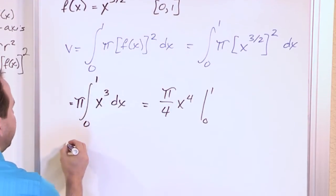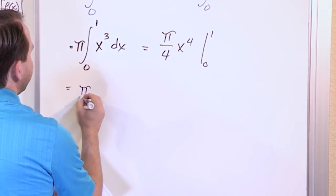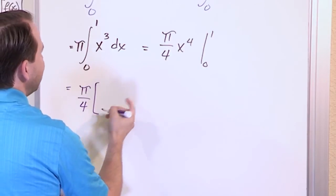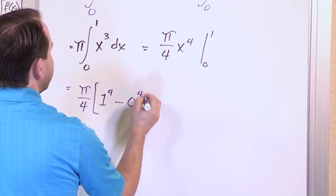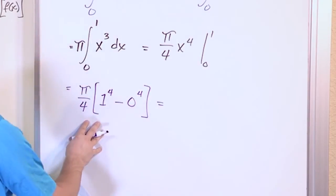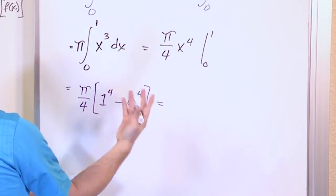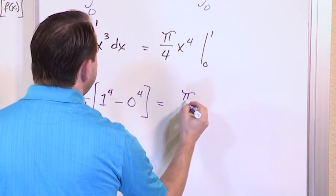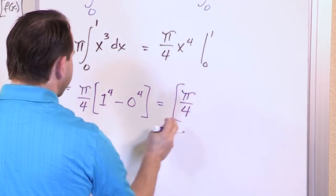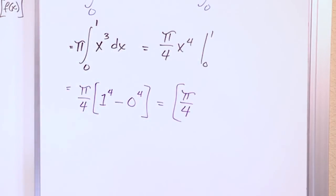And so now we just have to evaluate it. Here is pi over four. And then on the inside, we evaluate it at the upper limit of integration minus the lower limit of integration, just like this. Now on the inside, one to the fourth is one minus this is going to be zero. So really the answer just remains pi over four because you're just multiplying by one. So pi over four is the answer.